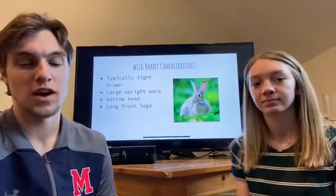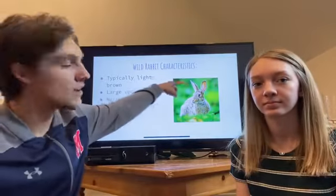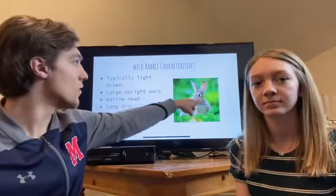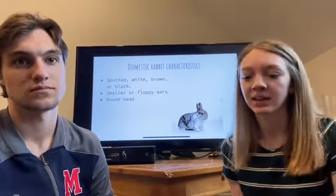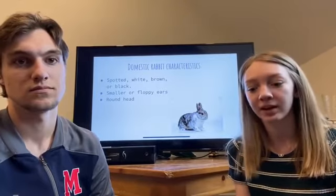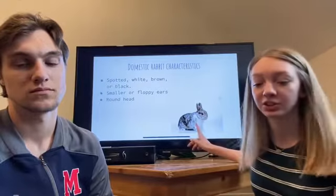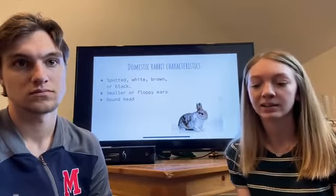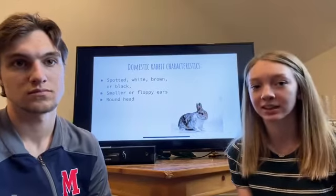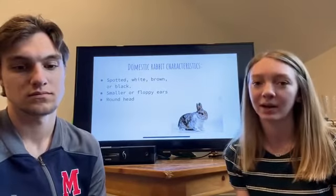So our first animal is the wild rabbit. They're typically light brown with large upright ears, like you can see in the picture right here, and they also have a very narrow head that kind of comes to a point, and they have long front legs. The domestic rabbit normally has spotted fur — or white, brown, or black — just like in this picture, and they have smaller ears than a wild rabbit, or they can have floppy ears, which means their ears lay down by their face, and they have more of a round head than the wild rabbit.